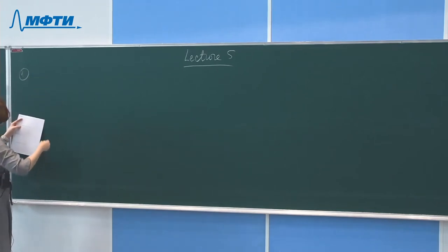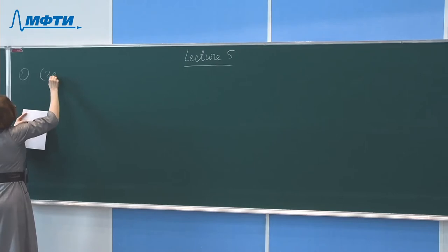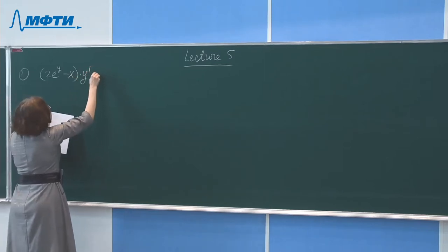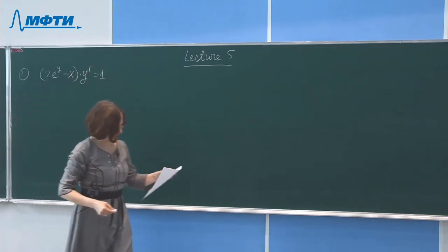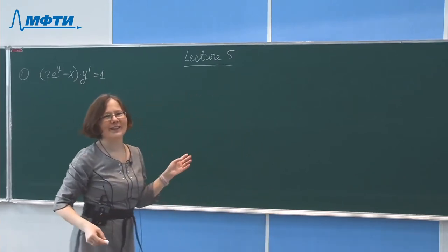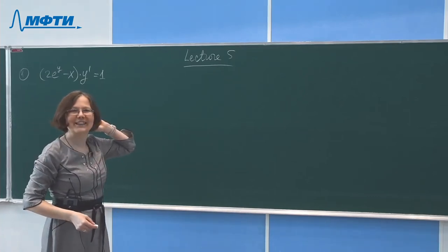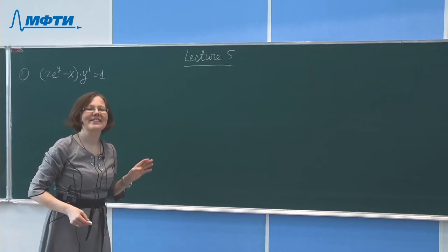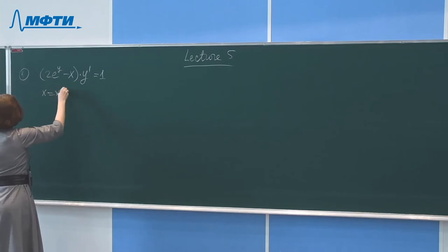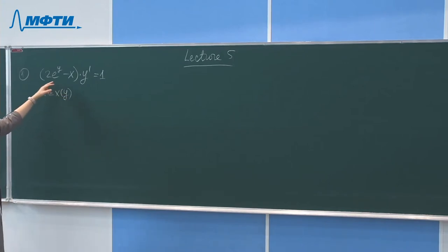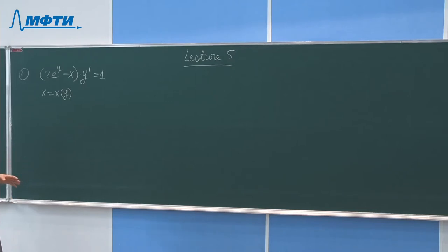Task number one: solve the differential equation 2e^y minus x times y-prime equals 1. To solve this, we recognize that x should be treated as a function of y, allowing us to rewrite this as a linear equation.